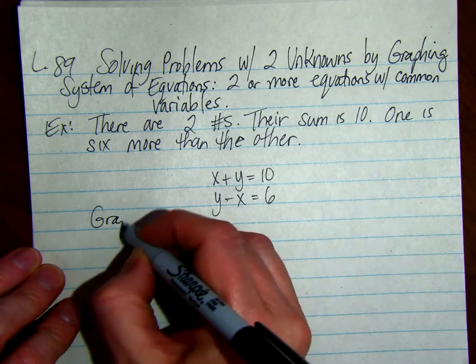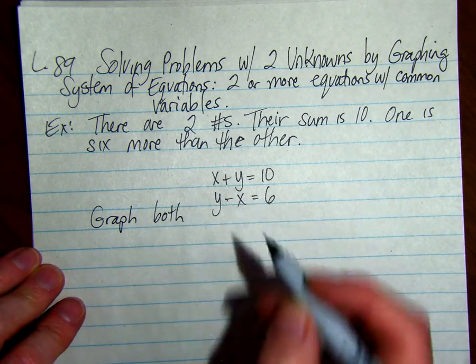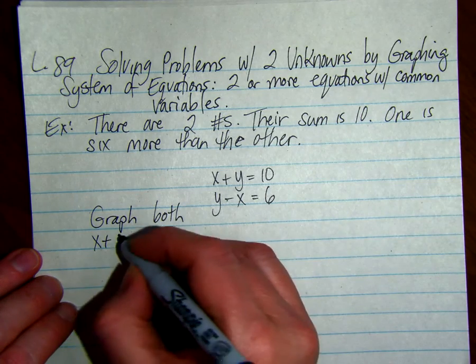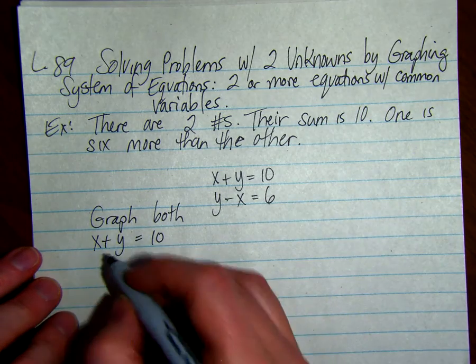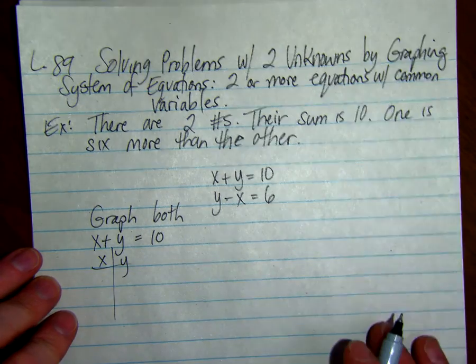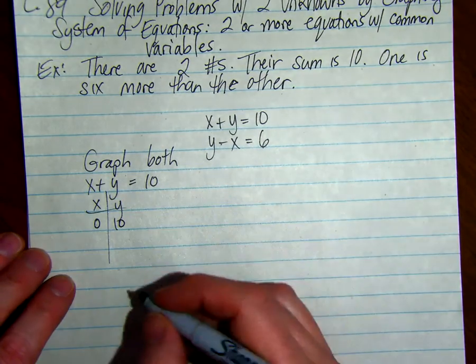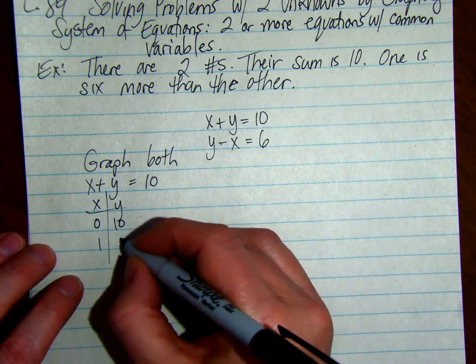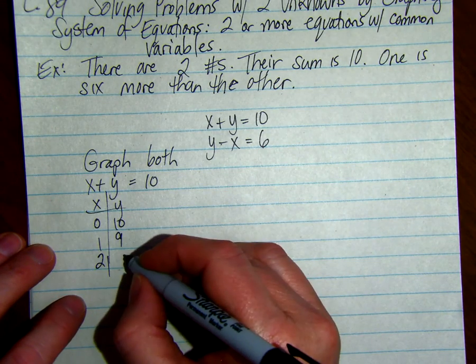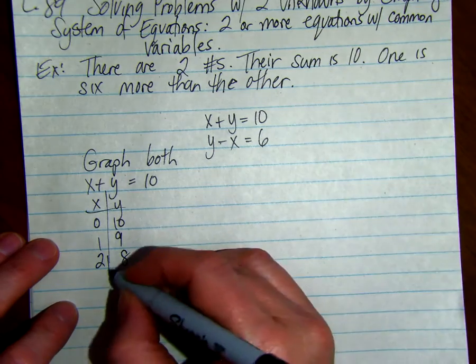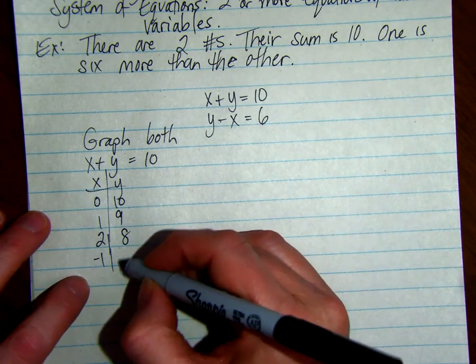We're going to graph both of those. So x plus y equals ten. We can do a table of values. If we have zero on x, y is ten. If x is one, y is nine. If x is two, y is eight. If x is negative one, y is eleven.